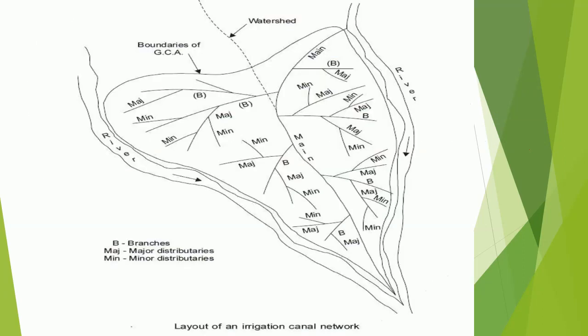This diagram shows the layout of different types of irrigation canals in a network. Main canals, branch canal, and major and minor distributories are shown in the diagram.